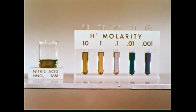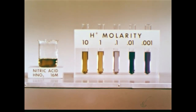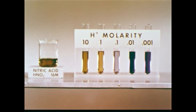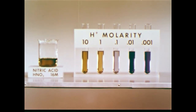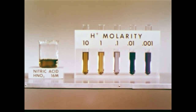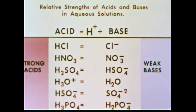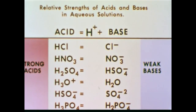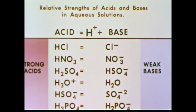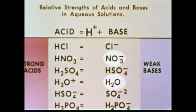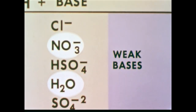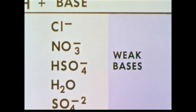If we are to reduce the acidity, we need to have present a stronger proton acceptor — that is, a stronger base than water or nitrate ion. This chart shows the relative strengths of certain acids and bases. We see that nitrate ion and water are among the weak bases, that is, poor proton acceptors.